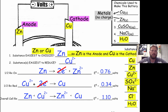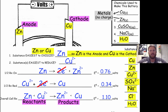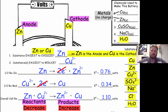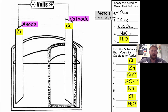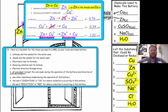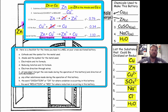Our overall reaction is: Zn + Cu²⁺ → Zn²⁺ + Cu, and the total voltage of this battery will be 1.1 volts. As a precursor to the questions that follow, note that zinc and Cu²⁺ ions are reactants, while Zn²⁺ ions and copper are products. As the reaction occurs, the concentration of reactants decreases and the concentration of products increases — those will come into play later when we answer questions about our battery.